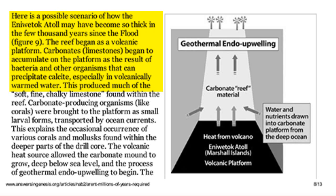Whitmore then goes on to explain: 'Here is a possible scenario of how the Eniwetak Atoll may have become so thick in the few thousand years since the flood. The reef began as a volcanic platform. Carbonates, limestones, began to accumulate on the platform as the result of bacteria and other organisms that can precipitate calcite, especially in volcanically warmed water.' So he's completely contradicting the previous post. The atoll has no longer been sinking at the rate of 16 inches a year, but instead, for 3,500 years, bacteria has been depositing muddy limestone on top of an old volcano a mile under the Pacific.